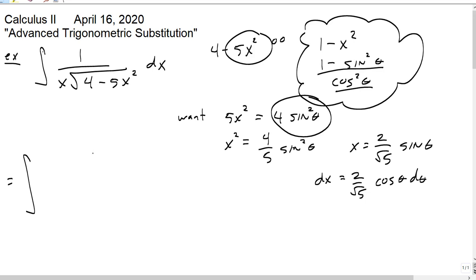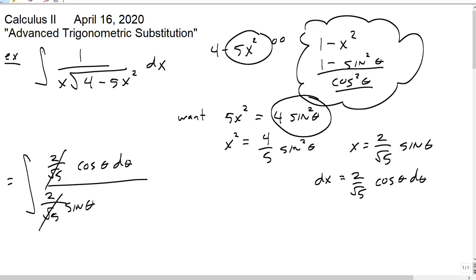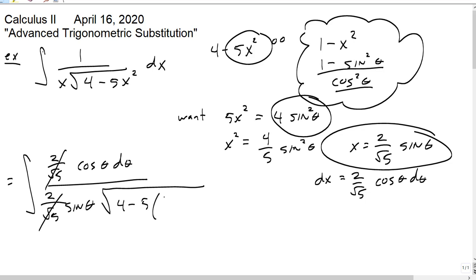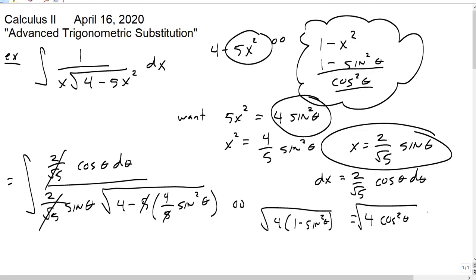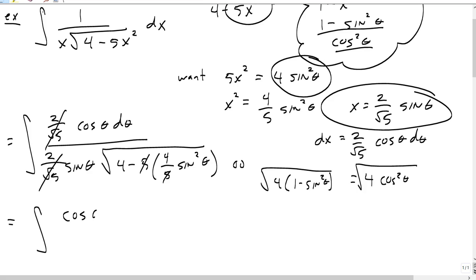The whole thing turns into: the dx up top is 2 over root 5 cosine of theta d theta; down below, x is 2 over root 5 sine of theta — those cancel nicely. Now the square root: 4 minus 5 times x squared, where x squared is 4/5 sine squared of theta. The 5's cancel out, the 4's factor out. We're looking at the square root of 4 times 1 minus sine squared theta, which is the square root of 4 cosine squared theta, giving 2 cosine theta. The cosines cancel, leaving a factor of one-half out front.